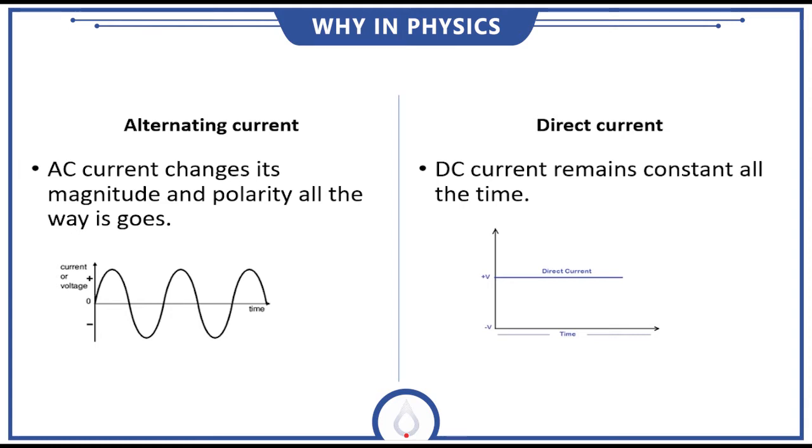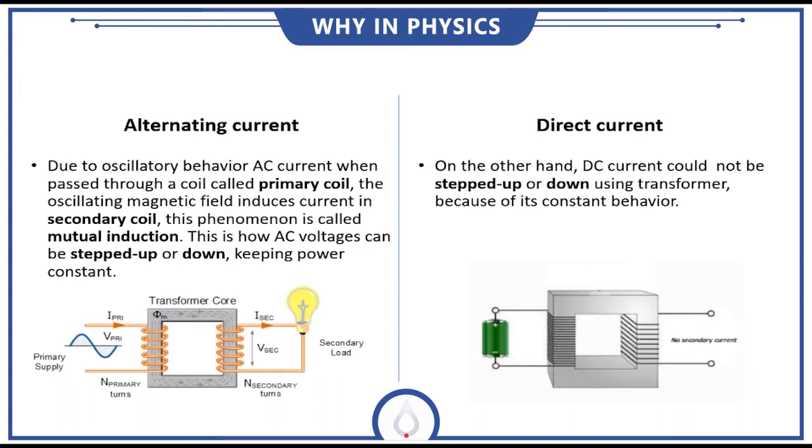So the major difference between both of the currents is AC changes its magnitude and polarity all the way it goes, and DC current remains constant in its direction and its magnitude all the time. So AC has something unique than the DC current. This uniqueness makes it more preferable than DC current.